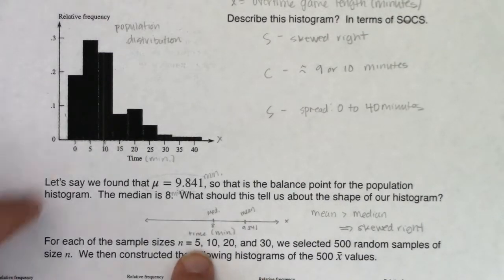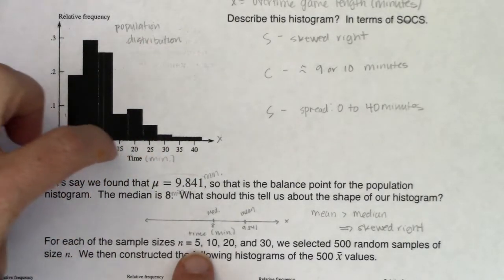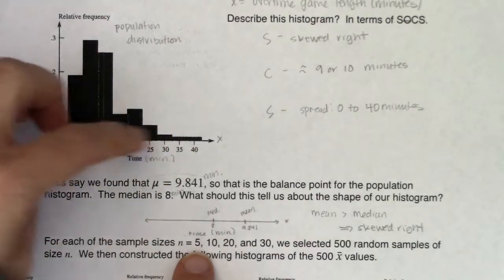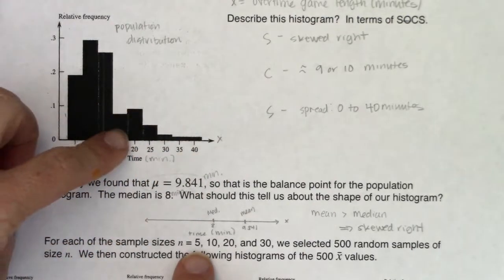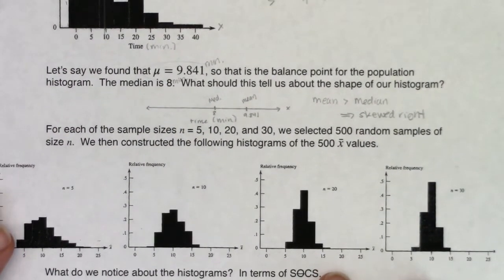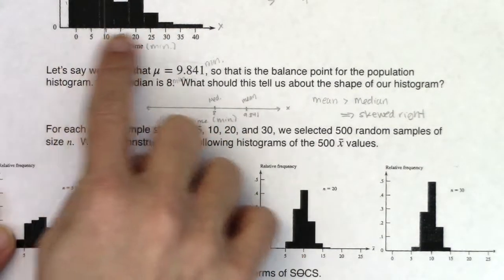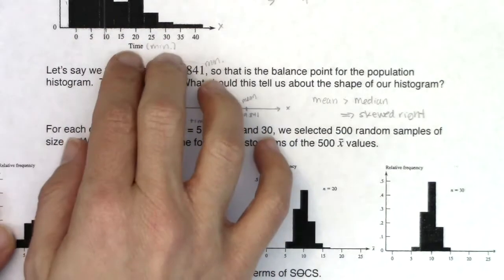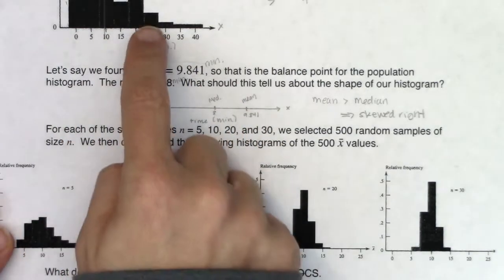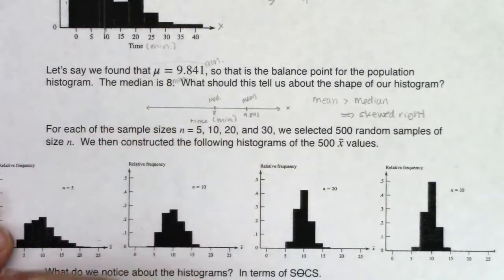What that means is: out of all of these games, I'm going to take a random sample of 5, find the average overtime length — that x-bar — and graph it. Then I'm going to take another random sample of 5 games, find its x-bar, graph it, and keep repeating — taking another random sample, finding an average, graphing it — until I make something called a sampling distribution.